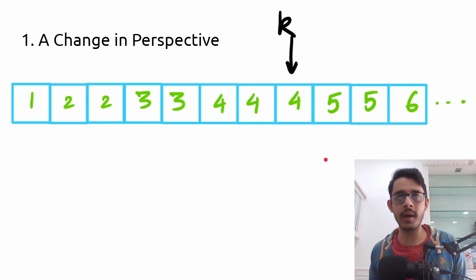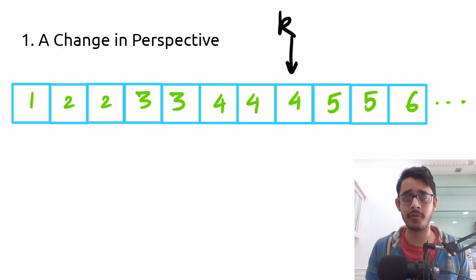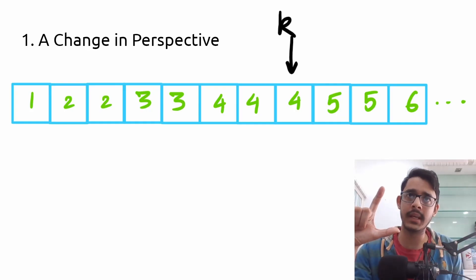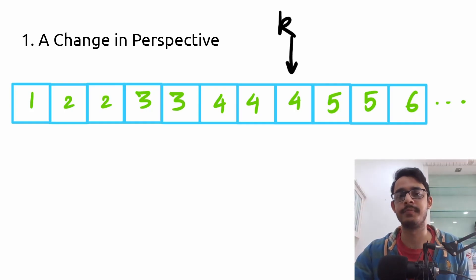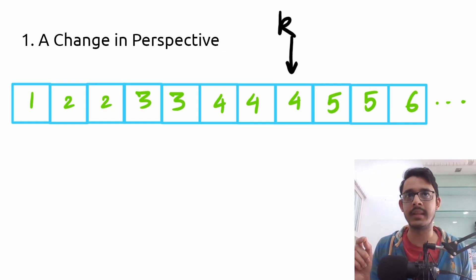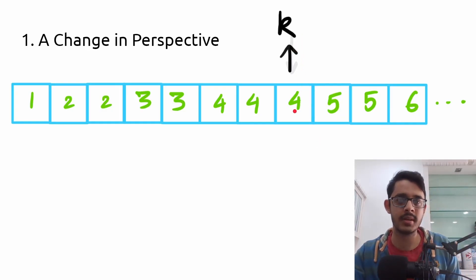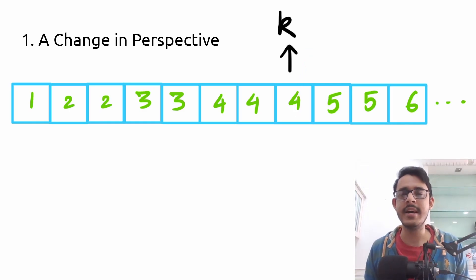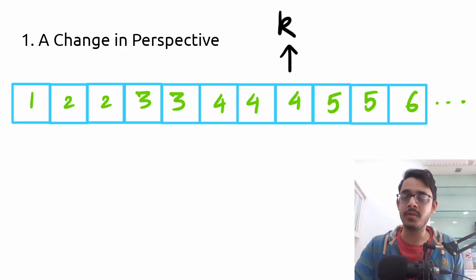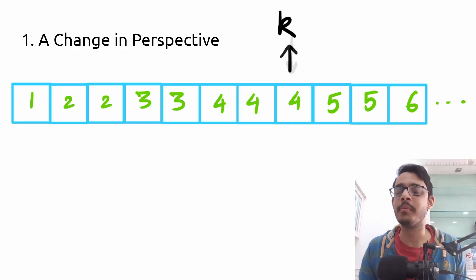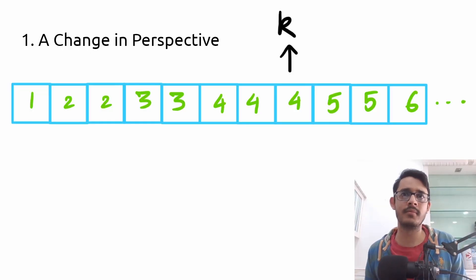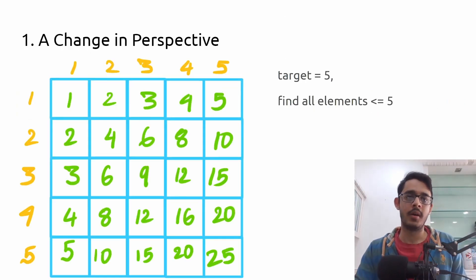Up until now we were creating a matrix, sorting all elements, and accessing the kth element. But what if we change things around? Instead of going from k to the number — trying to find the answer in that direction — what if we go from number to k? This forms the basis for our entire solution: a simple change in perspective.